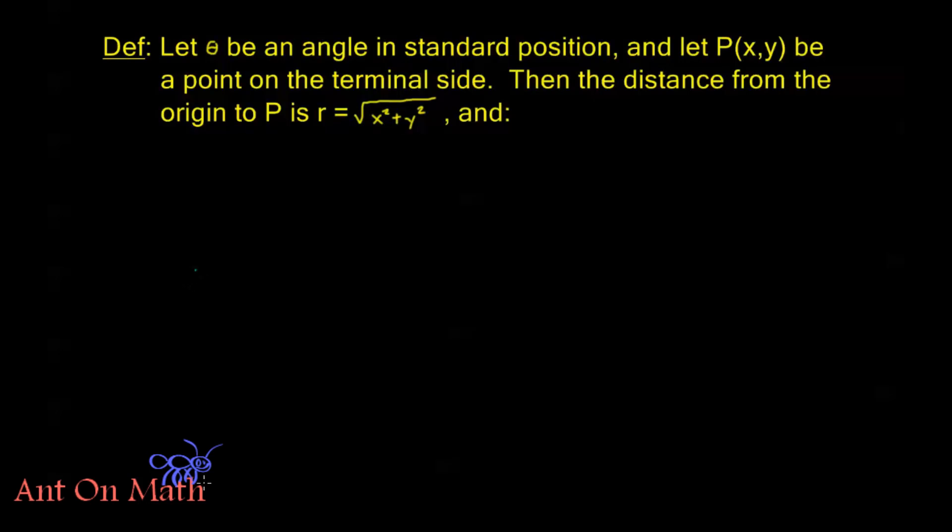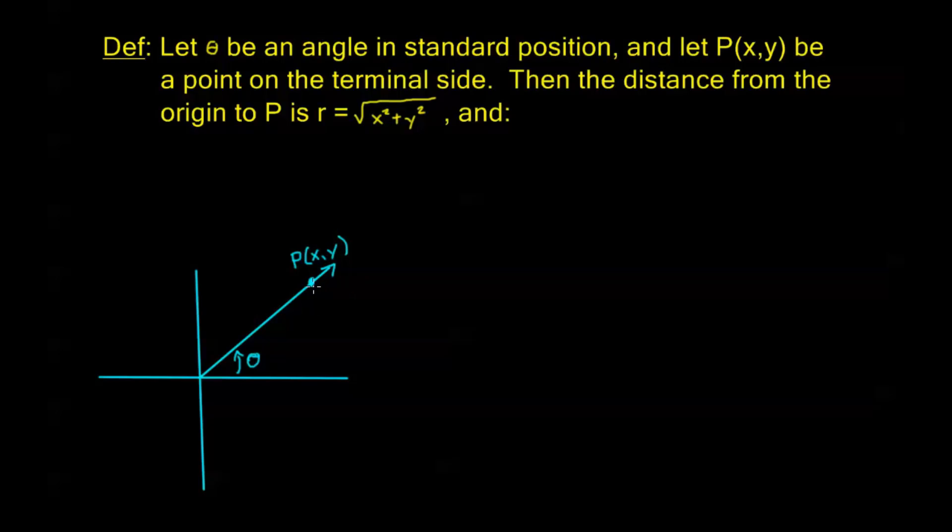I'm saying I have an angle in standard position, so I have an xy coordinate plane. My angle in standard position means that I'm using the x-axis as my initial side. This is my terminal side here. So here's my angle θ between the initial side and the terminal side. Now I'm saying that I'm going to take some point P on my terminal side, P(x,y). Let's go ahead and draw this down here.